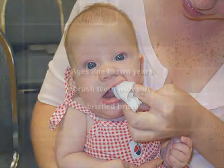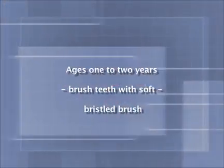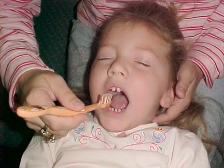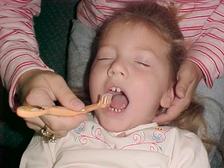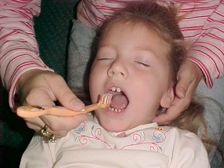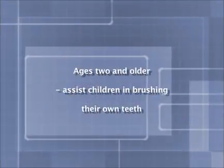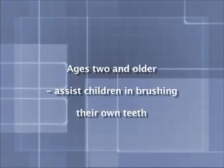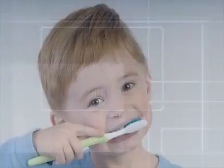For children between the age of one and two years, once daily after a meal, Head Start staff or volunteers if available must brush children's teeth with a soft bristled toothbrush using a small smear of toothpaste that contains fluoride. For children aged two and over, once daily after a meal, Head Start staff or volunteers if available should assist children in brushing their teeth using a smear of fluoride toothpaste.